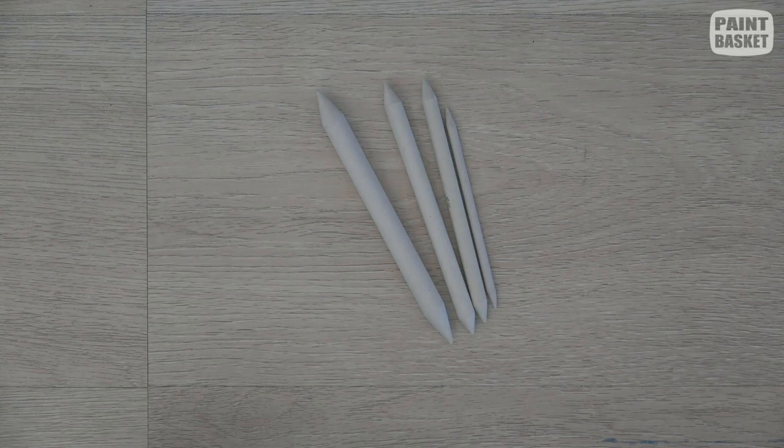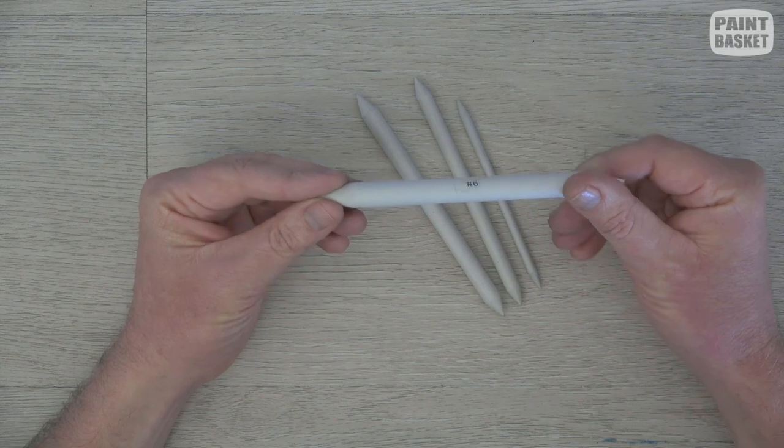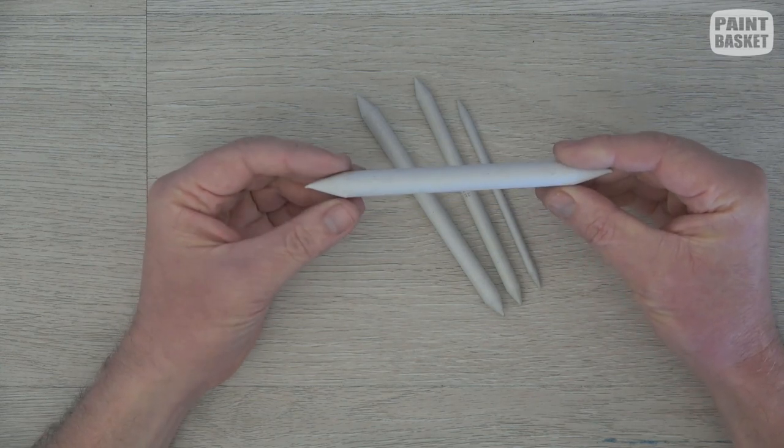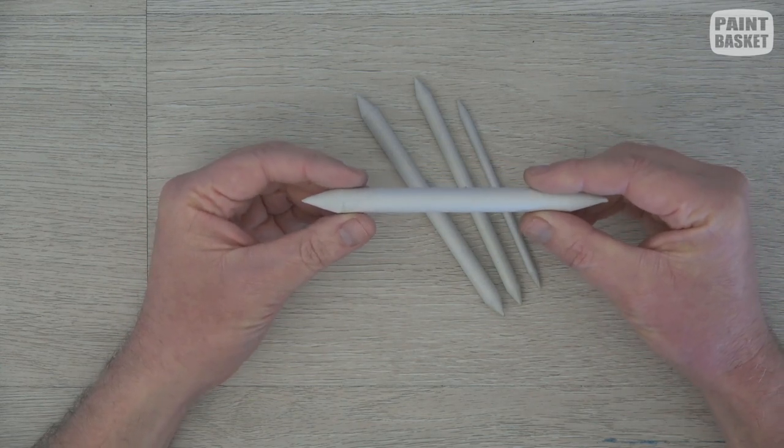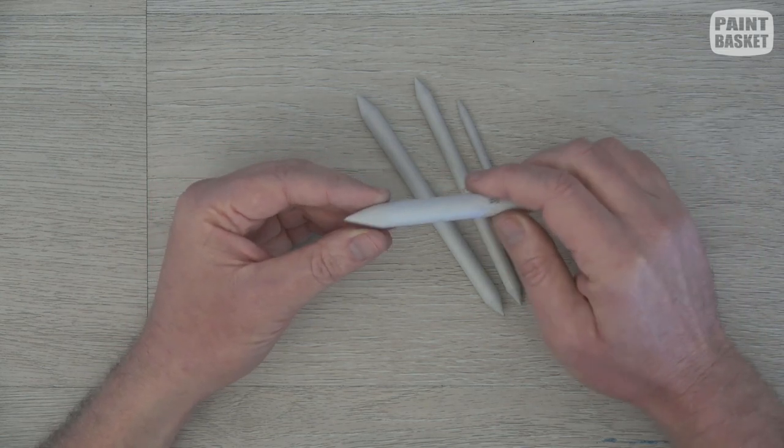So this is what the bought blending stumps look like. They're made of paper rolled up really tightly and then ground into this point over here. So they do work great, they really do, but only for a very short while.